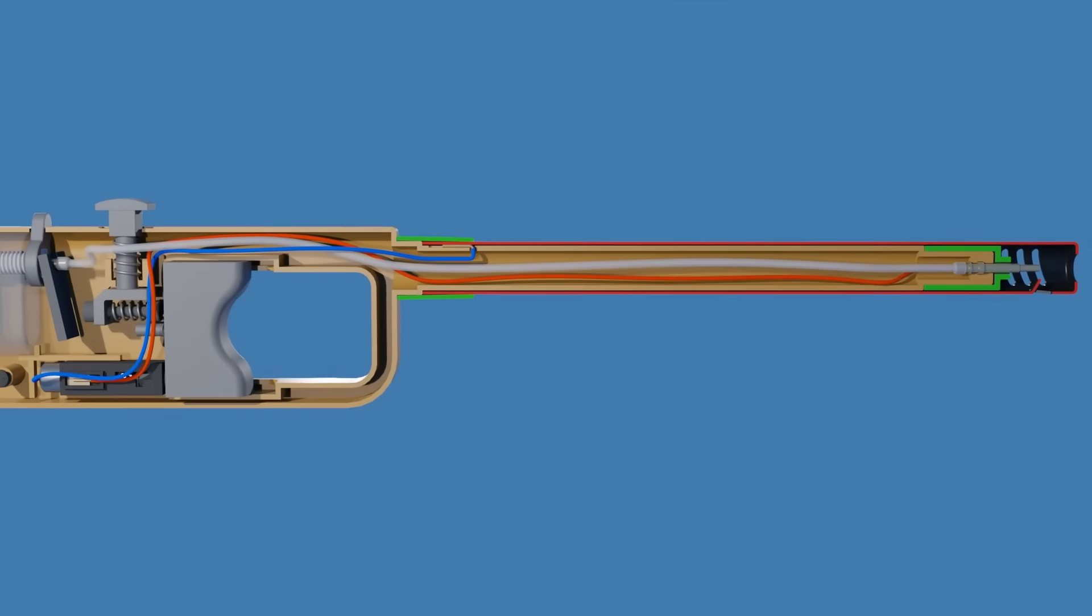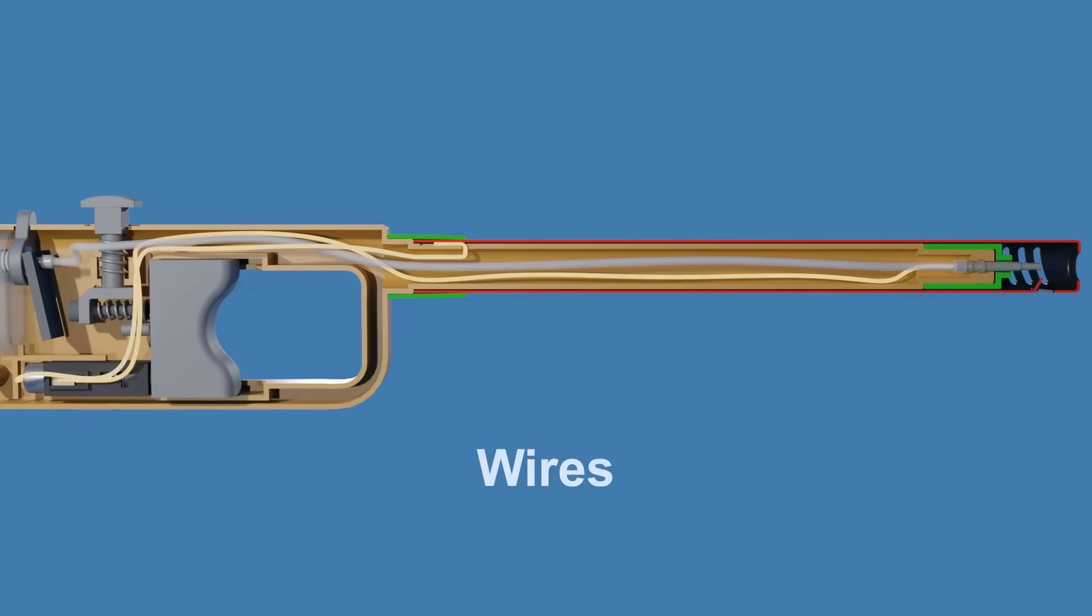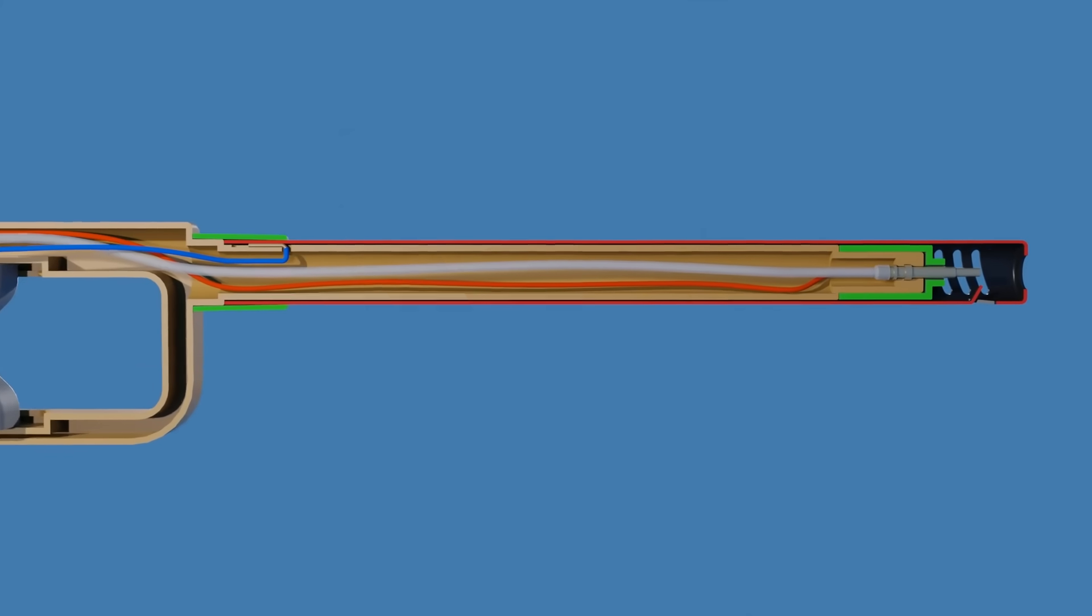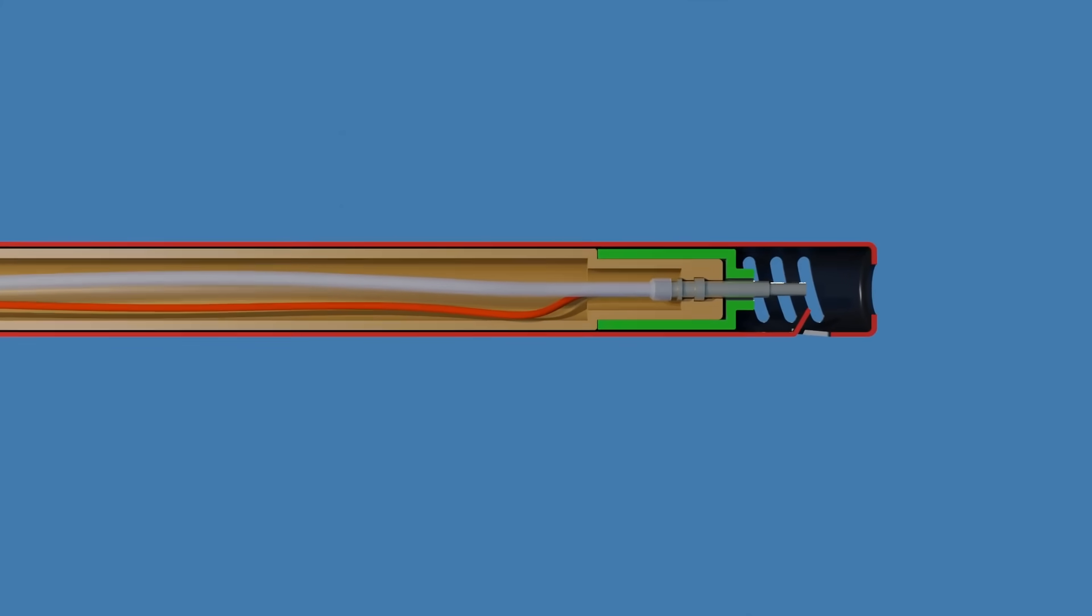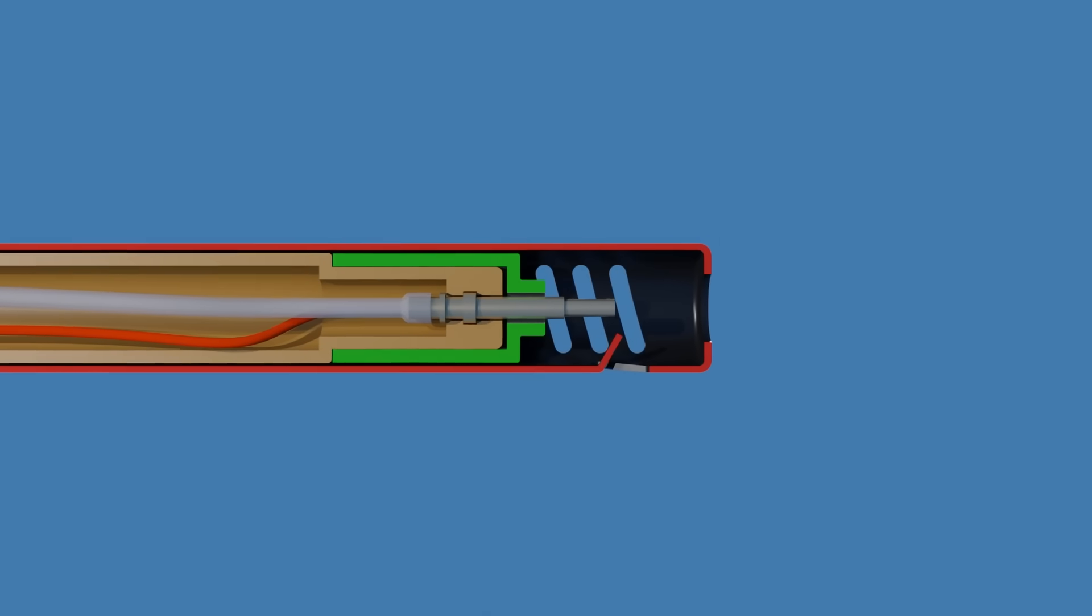The electric discharge travels through wires to a small gap near the gas outlet of the lighter. The high voltage ionizes the air in the gap, creating the spark. This spark ignites the gas being released from the gas outlet, producing a flame.